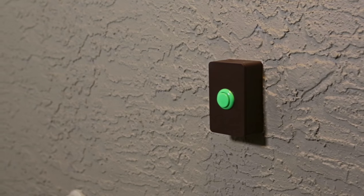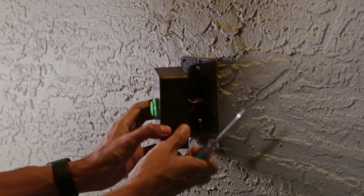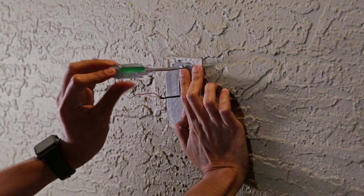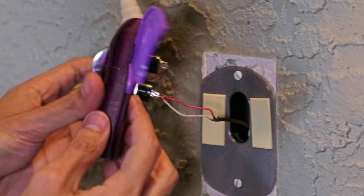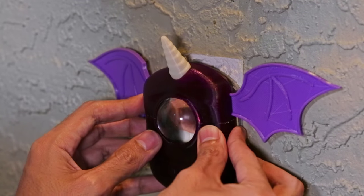Common household doorbells are mounted with two screws. Remove it using a screwdriver and replace it with the 3D printed mounting plate. Carefully connect the two wires from the doorbell to the second push button and attach it to the mounting plate.